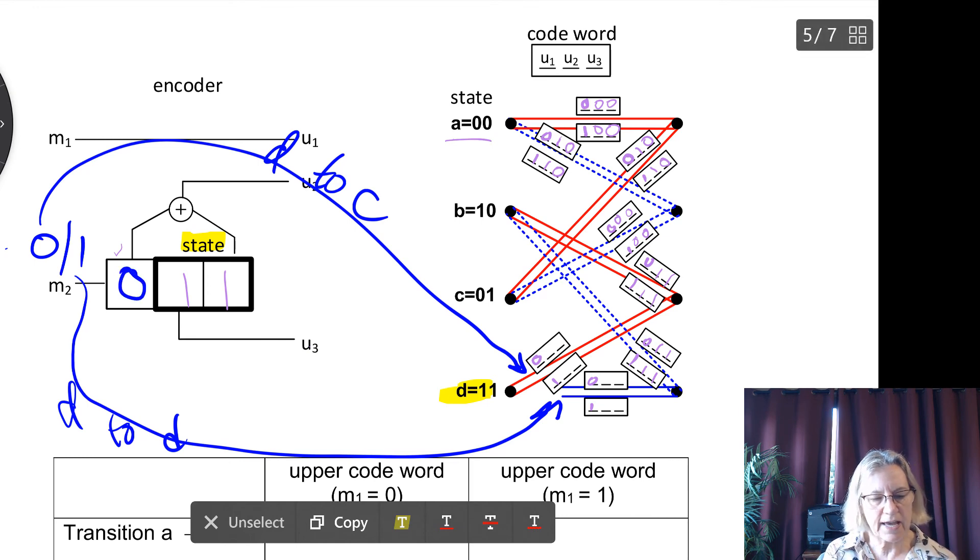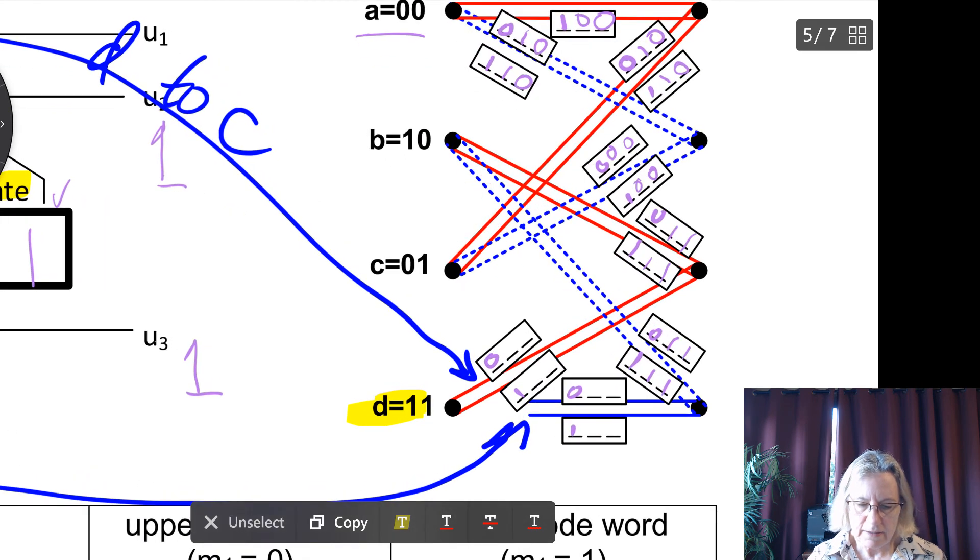In this case, I can calculate the two code words. For U2, it is 0 plus 1, which gives me a 1. And for U3, of course, it just is the second bit. So in this case, I can write in the elements are 1, 1, 1, 1 for this transition.